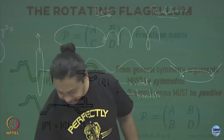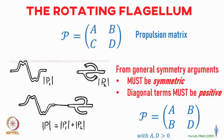This is an approximation. But what Purcell argued from very general symmetry arguments is that this propulsion matrix must necessarily be symmetric — not diagonal — which means b must equal c. And the diagonal terms a and d must necessarily be positive.